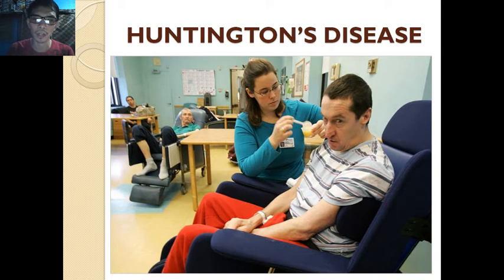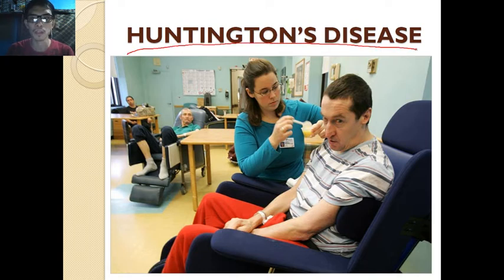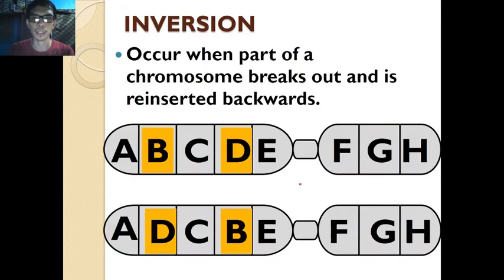An example of a disease under insertion mutation is Huntington's disease — the inability of the body to control motor movement.